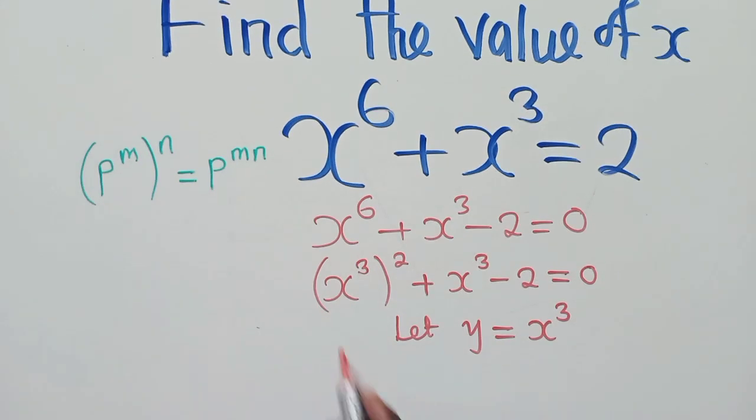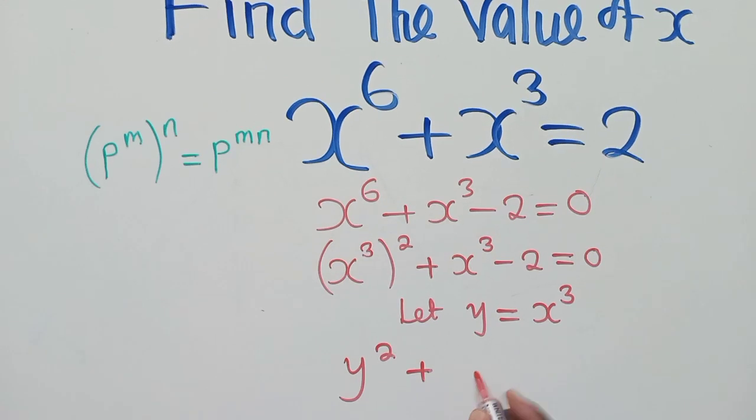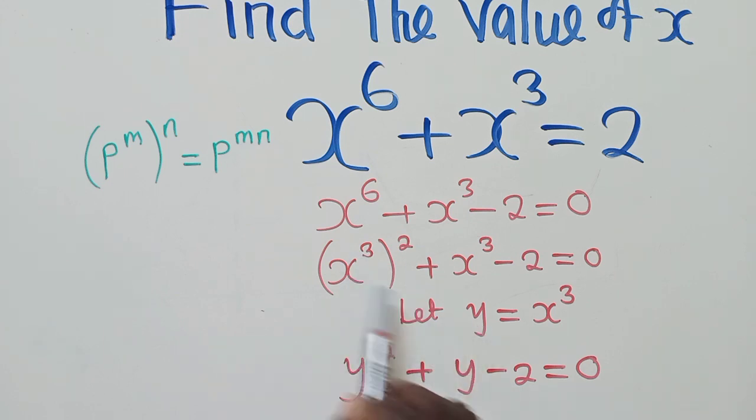And thereafter I substitute: y to the power 2 plus y minus 2 is equal to 0. So I've got a quadratic equation here. I've just substituted here. Put this y here and here. So here I will remain with y to the power 2. Here when I substitute y, I will just remain with y and minus 2 there.